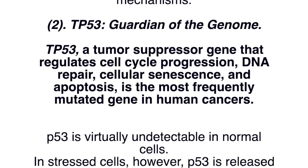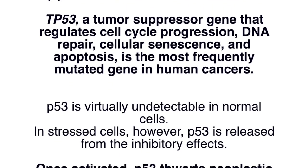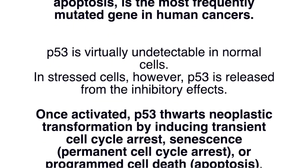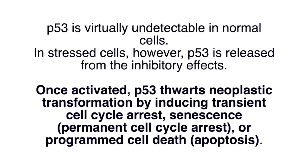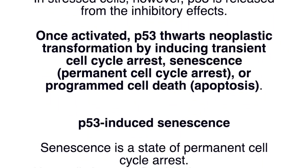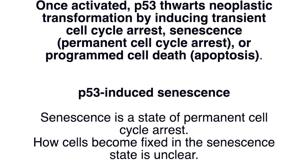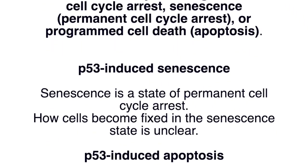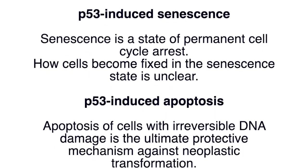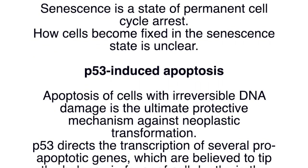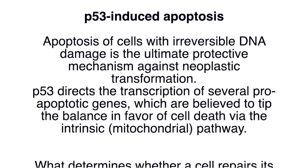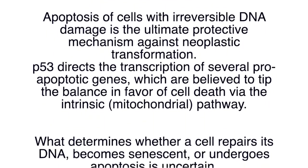P53 is virtually undetectable in normal cells. In stressed cells, however, P53 is released from inhibitory effects. Once activated, P53 thwarts neoplastic transformation by inducing transient cell cycle arrest, senescence (that is, permanent cell cycle arrest), or programmed cell death (that is, apoptosis). Senescence is a state of permanent cell cycle arrest, though how cells become fixed in this state is unclear. Apoptosis of cells with irreversible DNA damage is the ultimate protective mechanism against neoplastic transformation. P53 directs the transcription of several pro-apoptotic genes which tip the balance in favour of cell death via the intrinsic mitochondrial pathway.